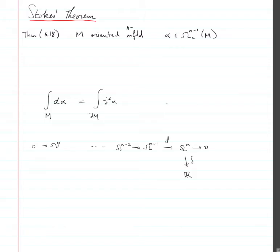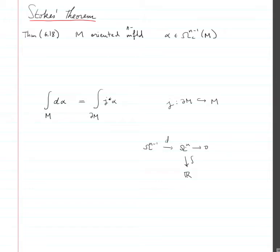And this j is the inclusion of the boundary of m inside m. So it's telling us that the integration over m is a map from n-forms to ℝ.